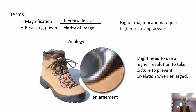Magnification increases images in size, while resolving power is the clarity of the image. Higher magnifications require higher resolving powers. If you enlarge just one section of an image without sufficient resolution, you'll get pixelation — so higher magnification needs higher resolving power.